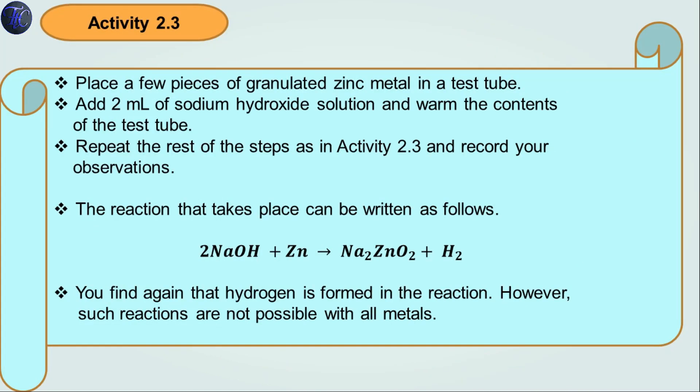Now let's talk about Activity 2.4. In this activity, we will observe the reaction of metal with base. Place a few pieces of granulated zinc metal in a test tube. Add 2 ml of sodium hydroxide solution and warm the contents of the test tube with the help of a burner. Repeat the rest of the steps as in Activity 2.3 and record the observation.